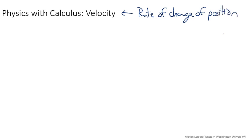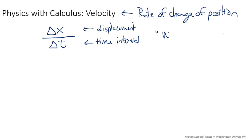By rate of change, what I mean is that there's a change in something, and it happens over some time interval. So it's a time rate of change. In this case, if we're talking about velocity, it's the time rate of change of position. So when we have displacement over a time interval, we call this the average speed.